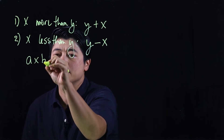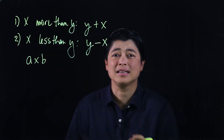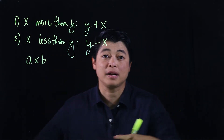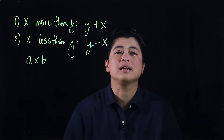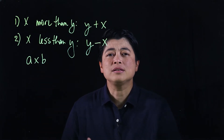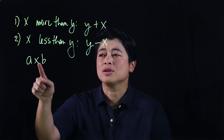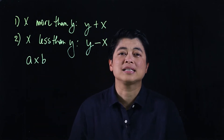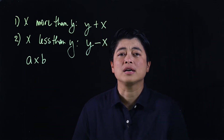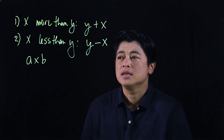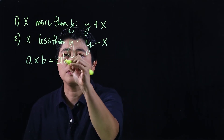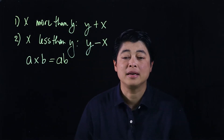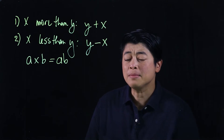We also have 'a times b.' This is a statement, not just an expression. Since we're now doing algebra, it's best not to use × as a symbol for multiplication, because it might be confused with the variable x. So from here on out, we want to write that as ab.